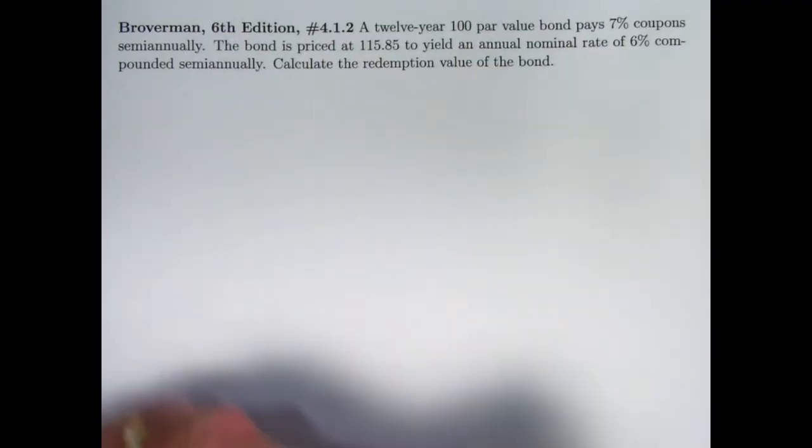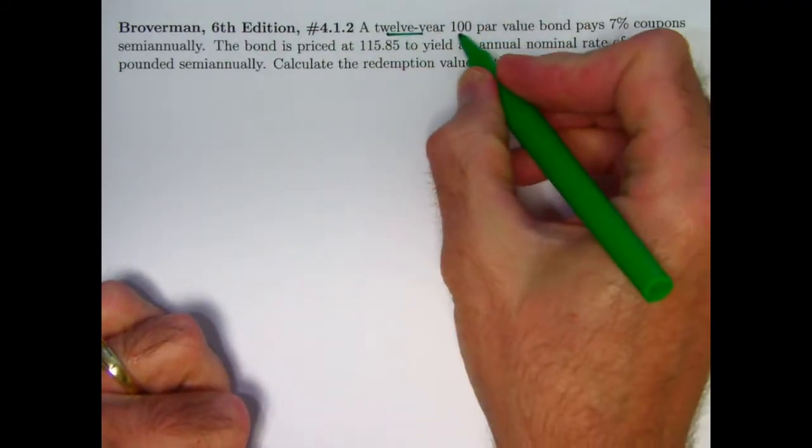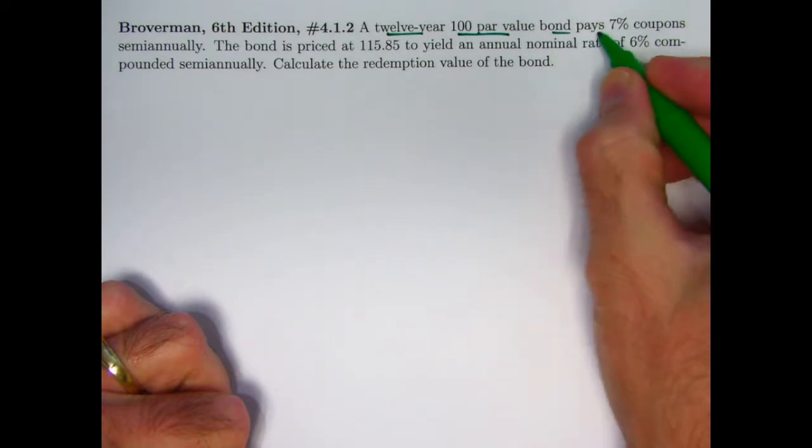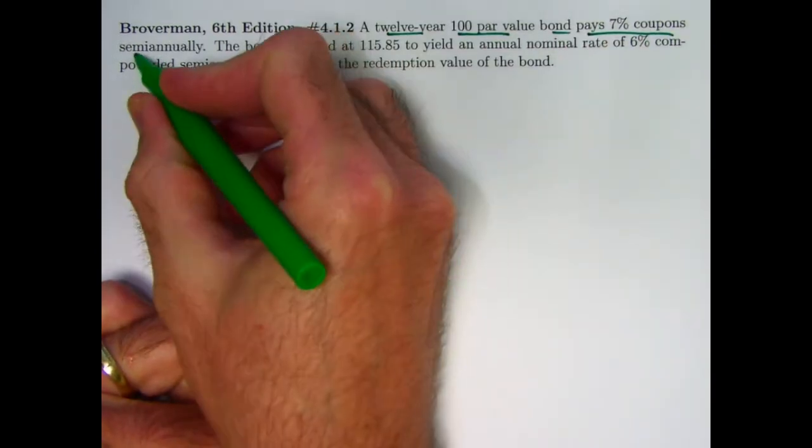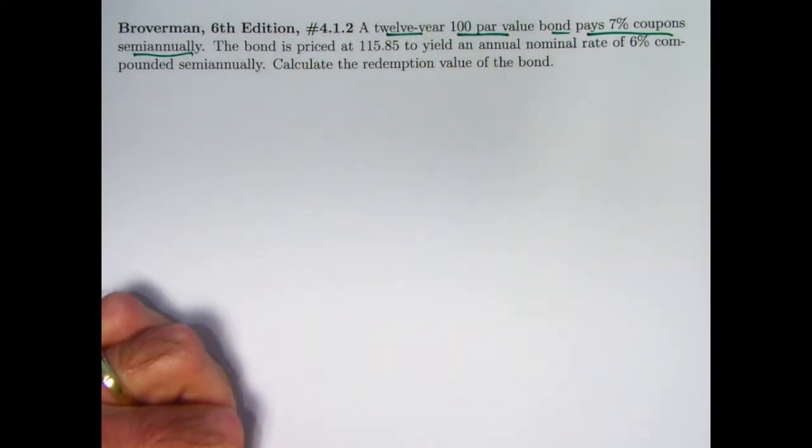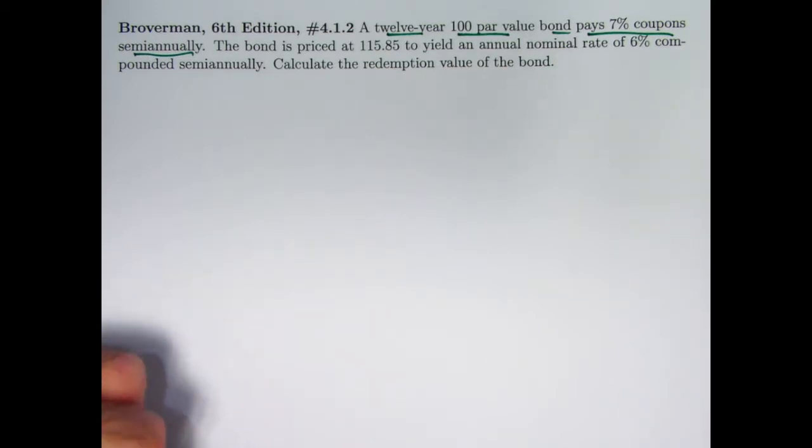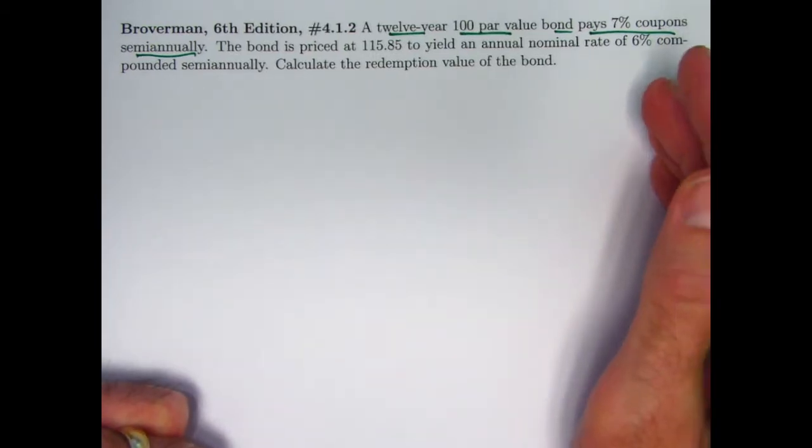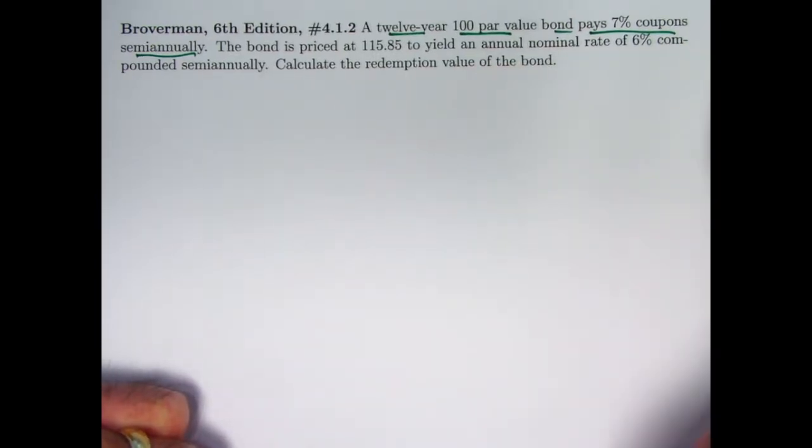Here's the problem. We've got a 12-year $100 par value bond. It's paying 7% coupons semi-annually. Like I said in the last video, the assumption generally is that it's semi-annual payments because that is the typical thing that's done with both corporate and government bonds. If it didn't say semi-annually, you would assume it's semi-annual.